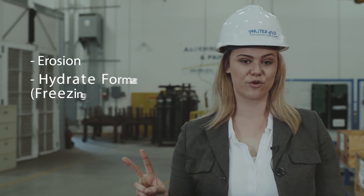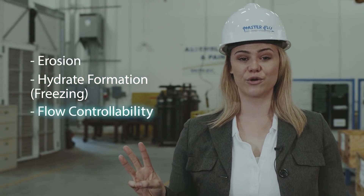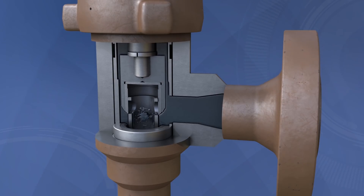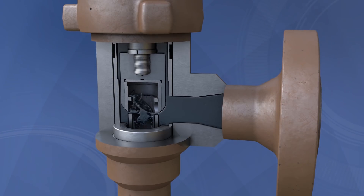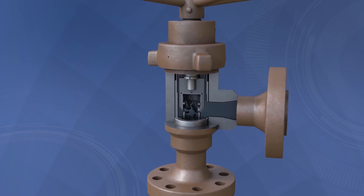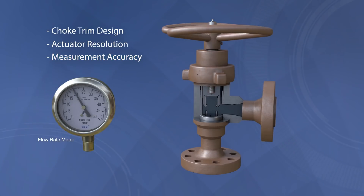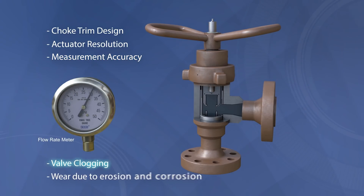All choke valves face three main problems: erosion, hydrate formation or freezing, and flow controllability. The flow rate is controlled by restricting the flow to a small opening or orifice. The degree and level of control depend on three main factors: choke trim design, actuator resolution, and measurement accuracy. Other factors include valve clogging and wear due to erosion and corrosion.